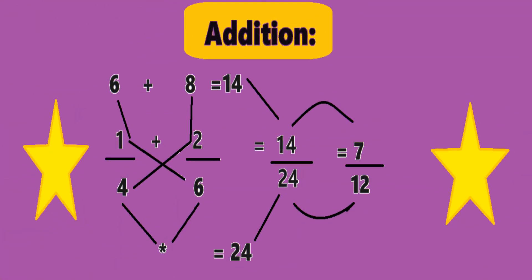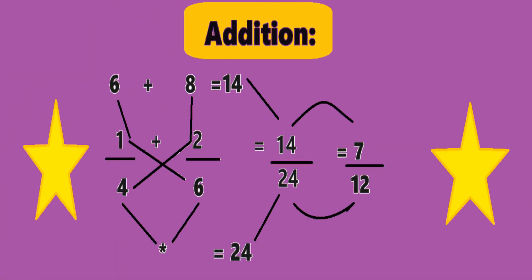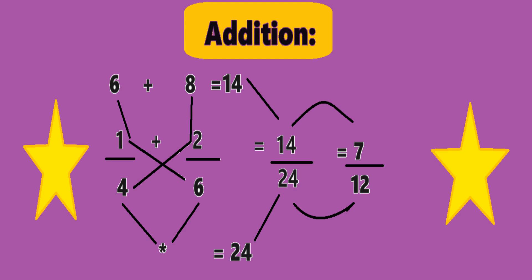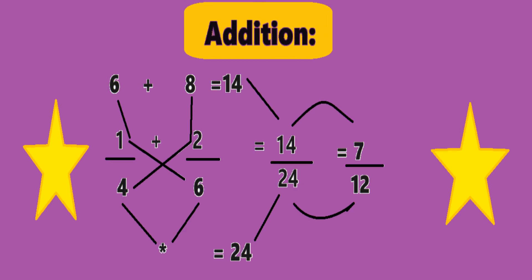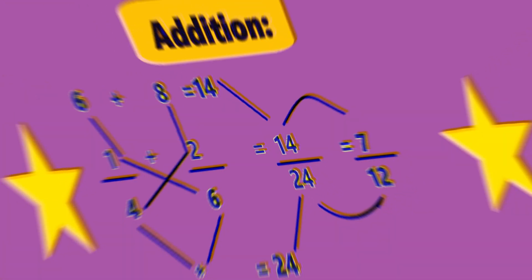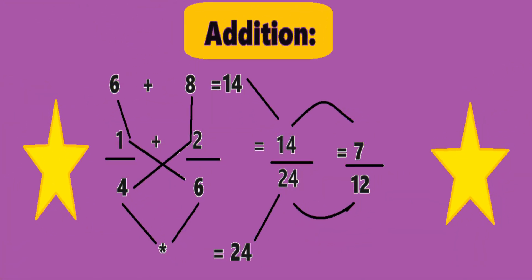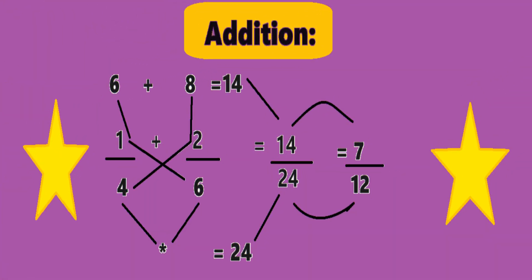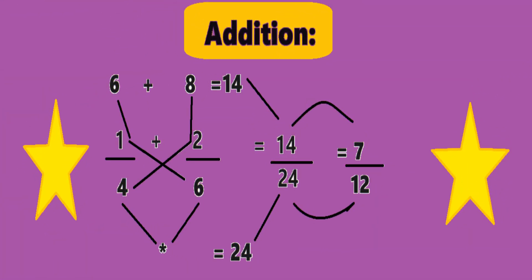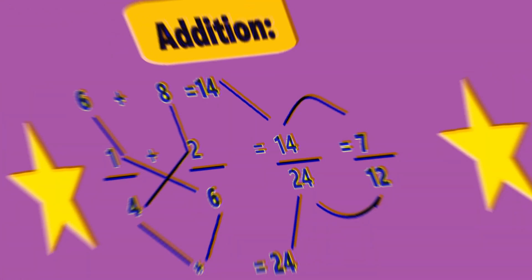A simple or easy method to do this is cross multiply: one into six and four into two, which will give us six and eight respectively. Now add six plus eight, which gives the result 14 — make it the numerator. Now multiply both denominators: four into six which will give us 24, and place it as the denominator, which gives us 14 divided by 24. This will give us 7 divided by 12 — that is, two sevens of 14, two twelves of 24. That's it.